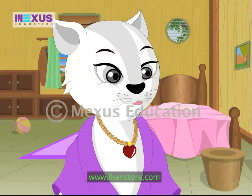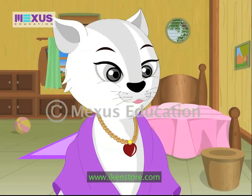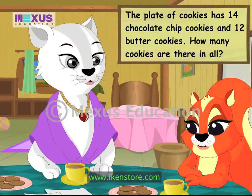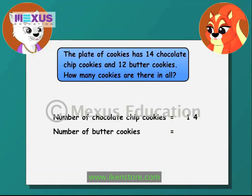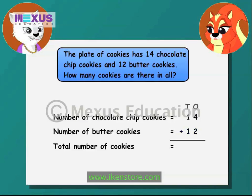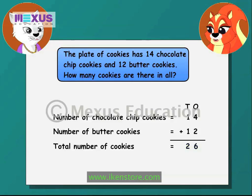Let's start with cookies. Amber, you solve the first word problem. The plate of cookies has 14 chocolate chip cookies and 12 butter cookies. How many cookies are there in all? The number of chocolate chip cookies is 14, the number of butter cookies is 12, so the total number of cookies is 14 plus 12. First, we need to add the ones: 4 plus 2 is equal to 6. Then we add the numbers in the tens column: 1 plus 1 is equal to 2. So 14 plus 12 is 26.